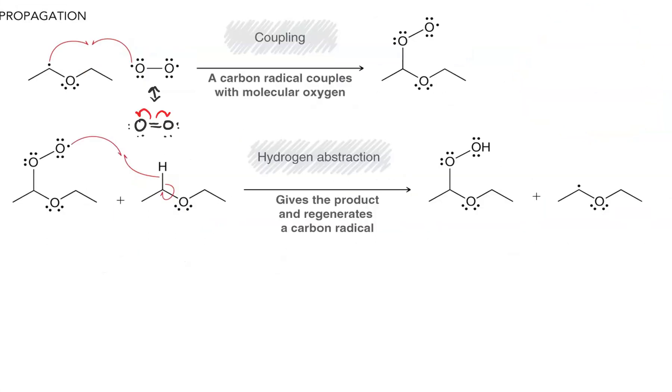In the second propagation step the peroxy ether we formed does hydrogen abstraction on another ether molecule to generate our ether hydroperoxide and another ether radical to continue the chain reaction.